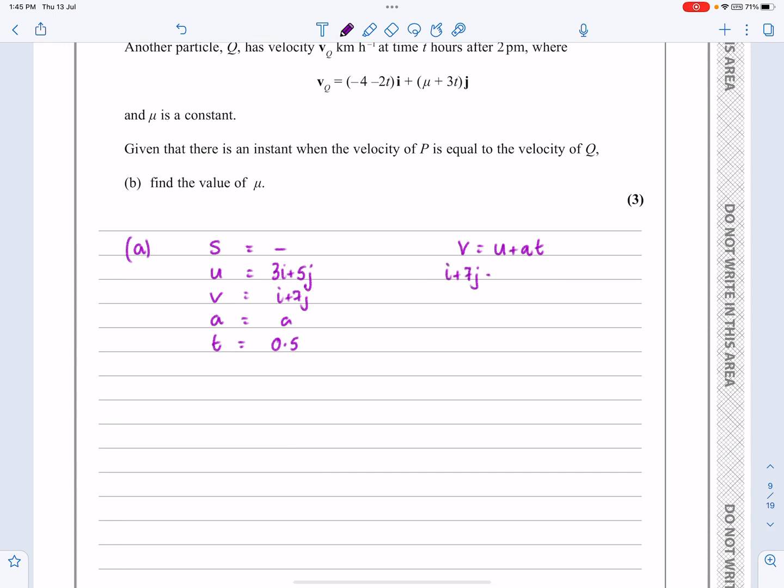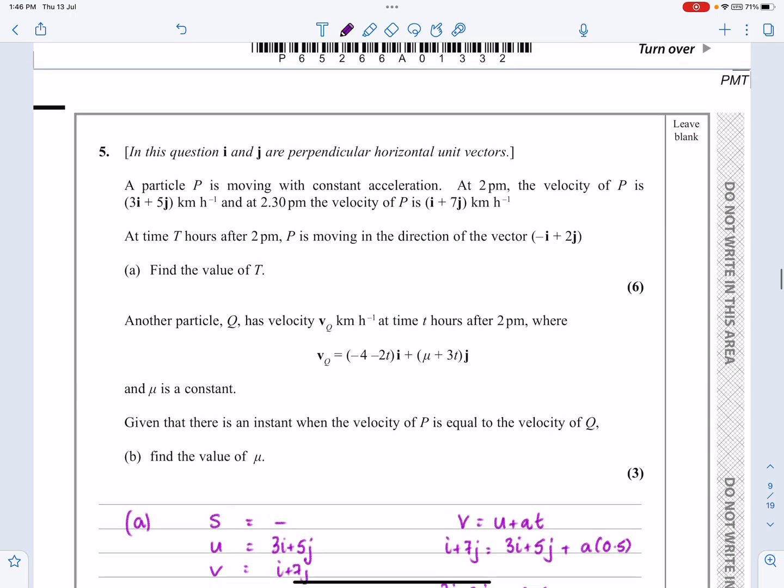Chuck everything in. I plus 7J is equal to 3I plus 5J, and we've got A times 0.5. Take that over to the other side, and I'm going to get minus 2I plus 2J is equal to 0.5A and so in that case, A is going to be equal to minus 4I plus 4J.